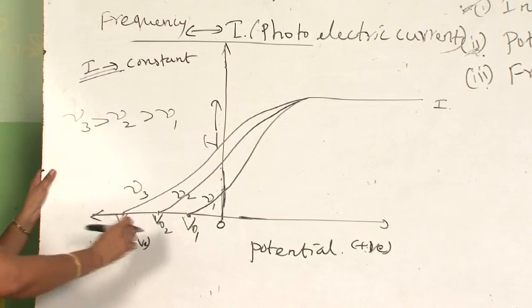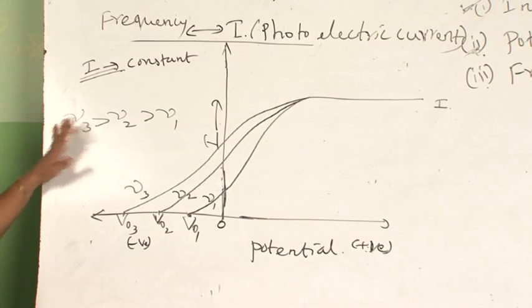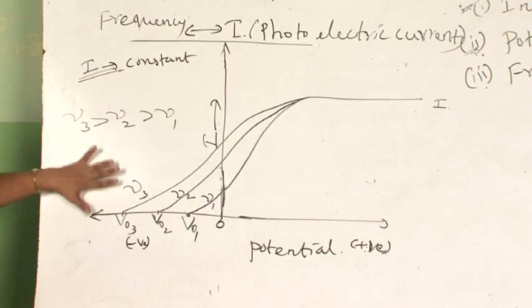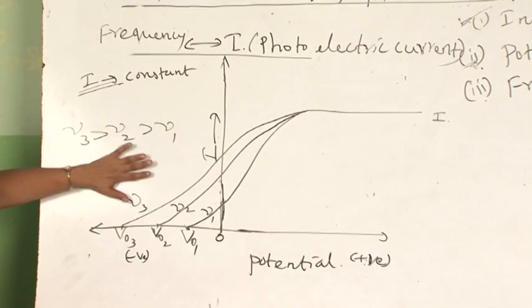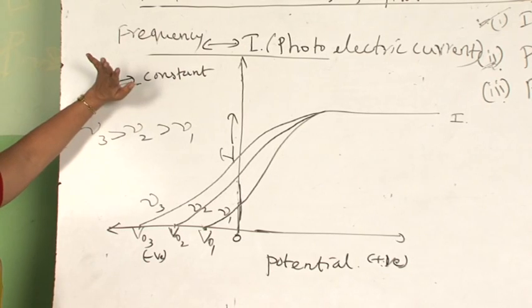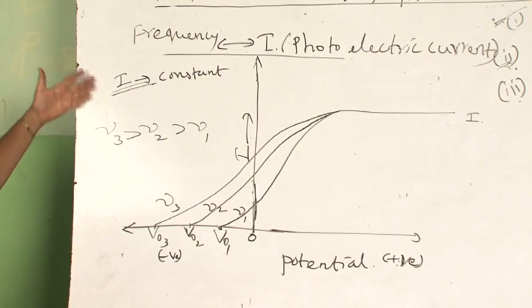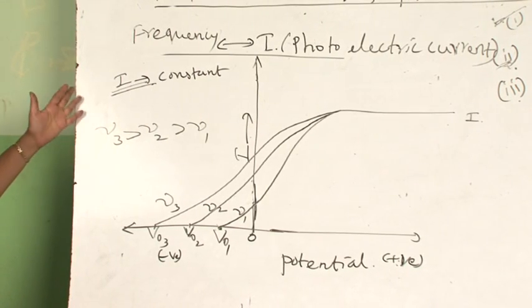These three graphs are very important from exam point of view; we have to be very careful in reading. The graph will be given to you and they may ask you which factor is kept constant. Without any confusion, we should be in a position to recollect.